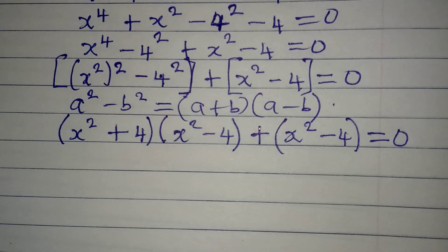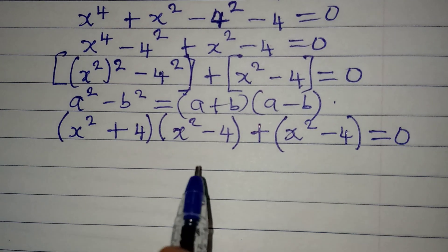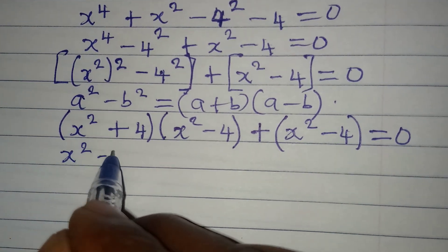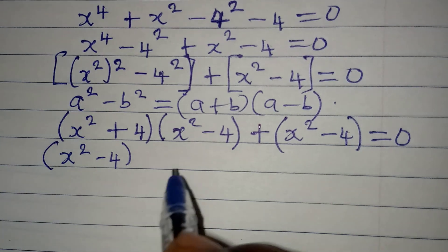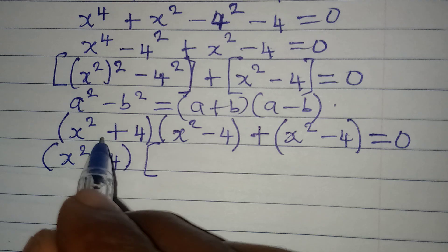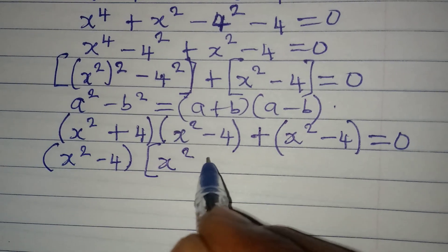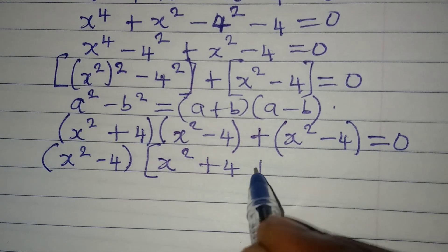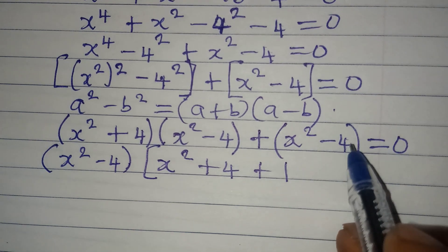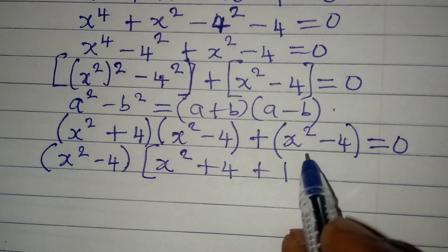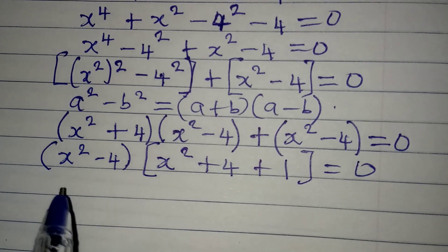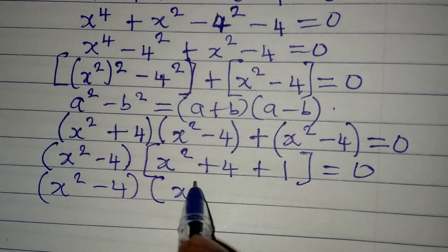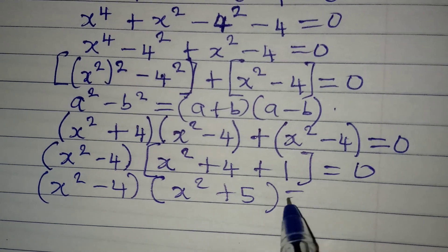Now I factor out x squared minus 4. It appears in two places, so factoring it out gives us x squared minus 4, times the bracket x squared plus 4 plus 1, equals 0. That simplifies to x squared minus 4, times x squared plus 5, equals 0.